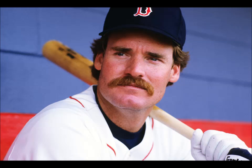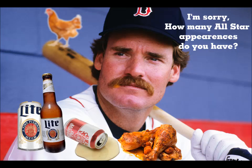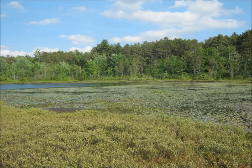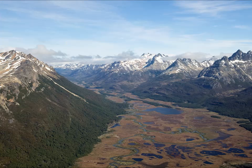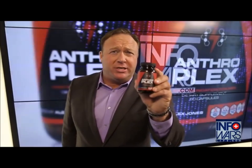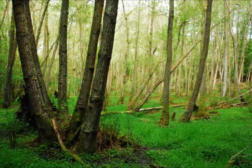Bogs have acidic water and are nutrient poor. Fens have more alkaline water and are nutrient rich. If the wetland is fed by sources that carry in a lot of nutrients, it'll become a fen. Bogs usually obtain their water from the rain. Fens, because they have so many nutrients, can over time turn into wet woodlands.